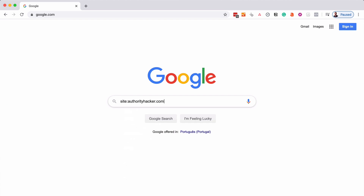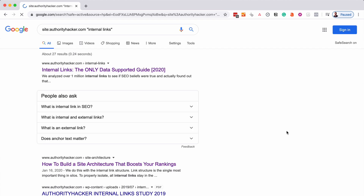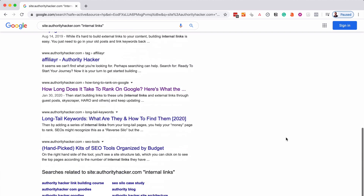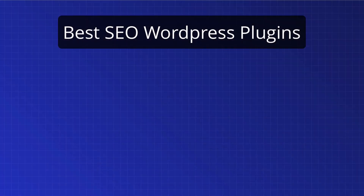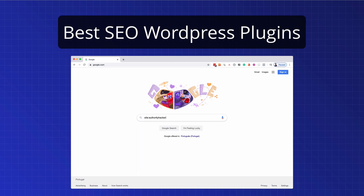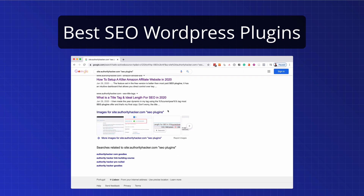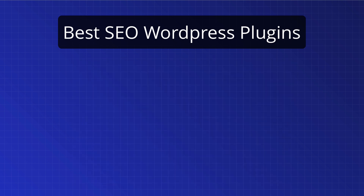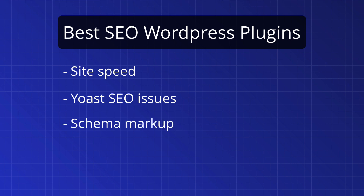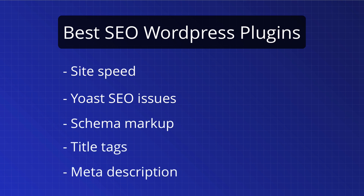The problem with internal links is there's no real automated way of doing it. The way I've been doing it was to use a site search on Google — site colon plus my domain — and then type the keyword related to the blog post. Google would give me a list of relevant posts to internal link to. This works pretty well, but it's not perfect. For example, an article on best SEO WordPress plugins has subtopics like site speed, schema, title tags, and meta descriptions — and my tactic doesn't really cover all those, so I'm missing a lot of internal link opportunities.